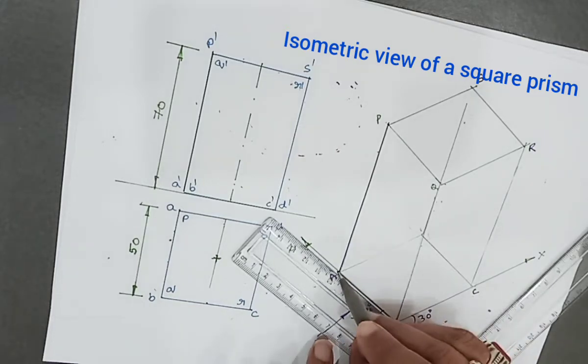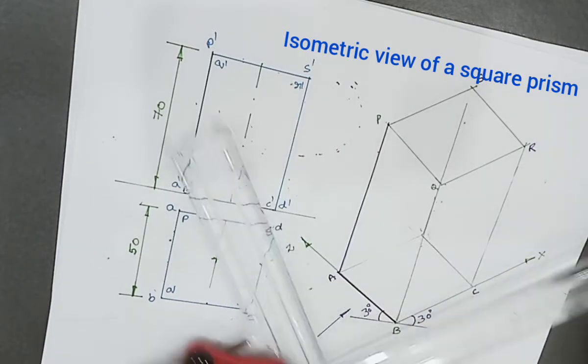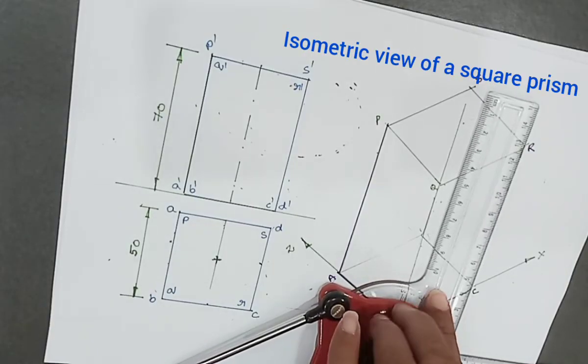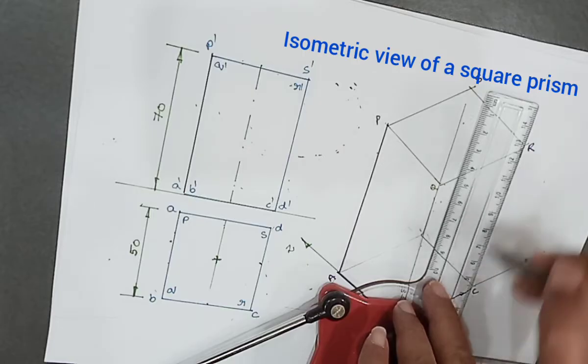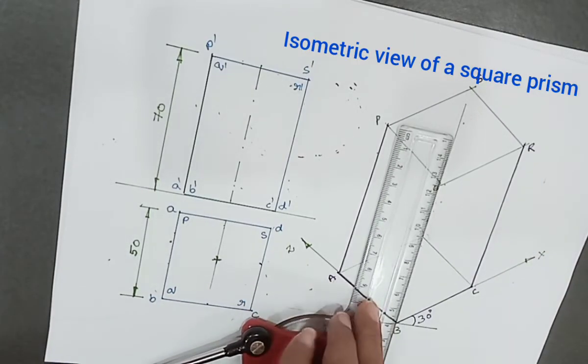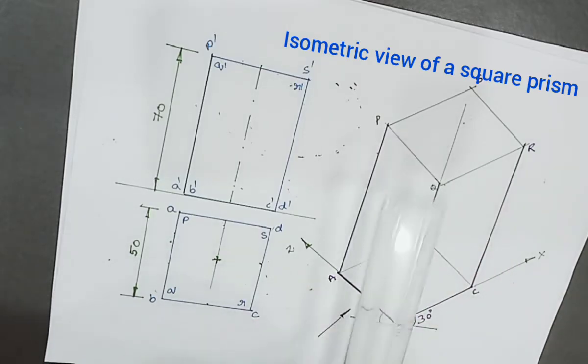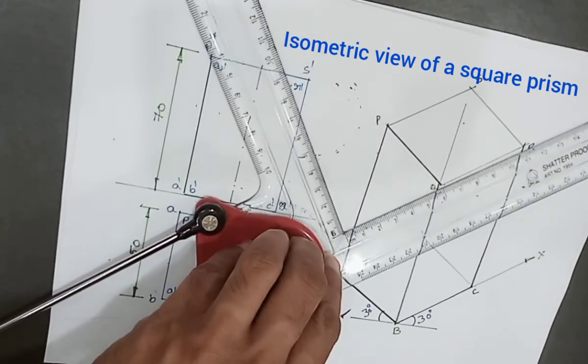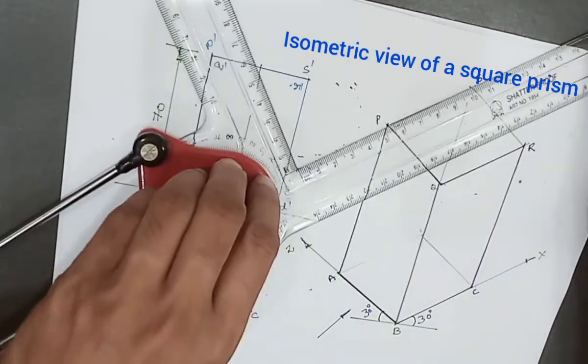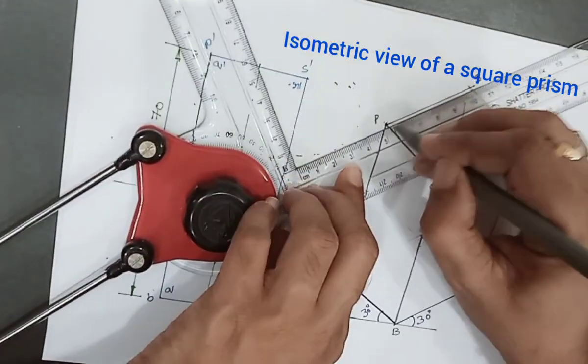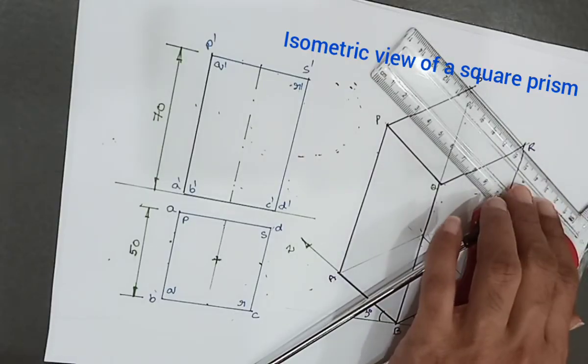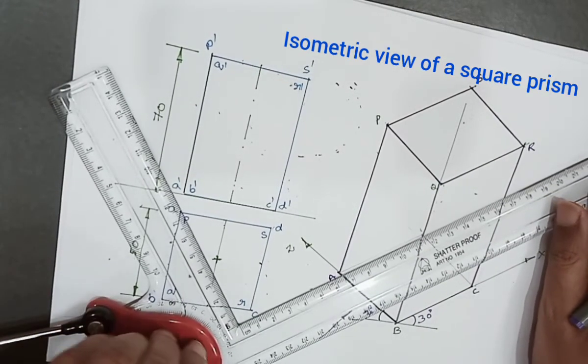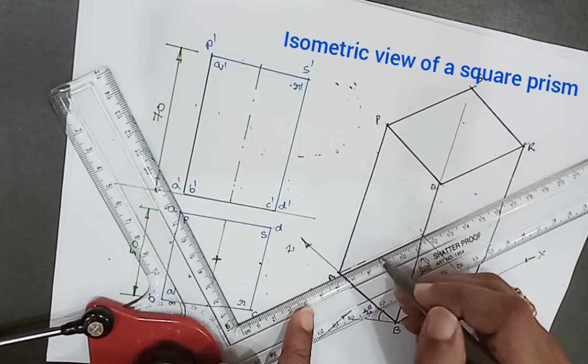This base is also fully visible. This base edge is fully visible. Even this base edge is also fully visible. This base edge is also fully visible. This edge is also fully visible. Then the top base is fully visible.